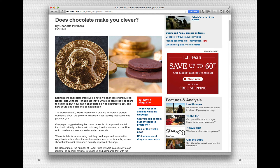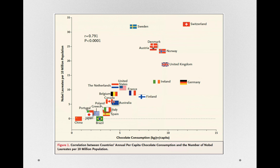Finally, here's a more recent one: does chocolate make you clever? In this study, they looked at the amount of chocolate consumed within a particular country and compared that to the number of Nobel laureates. Here we have the actual plot showing for each individual country the chocolate consumption per capita in kilograms per year, and on the y-axis the number of Nobel laureates per 10 million people. Those countries with more chocolate consumption also tend to be those with more Nobel laureates. Can you think of any reasons other than chocolate causing intelligence that we might observe such a relationship?